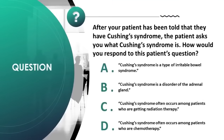After your patient has been told they have Cushing's syndrome, the patient asks what it is. Options: A) a type of irritable bowel syndrome, B) a disorder of the adrenal gland, C) occurs among patients getting radiation therapy, D) occurs among patients getting chemotherapy. Correct answer is B. Cushing's syndrome is a disorder of the adrenal gland.